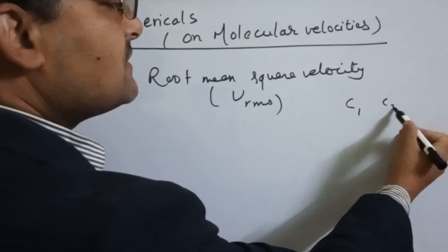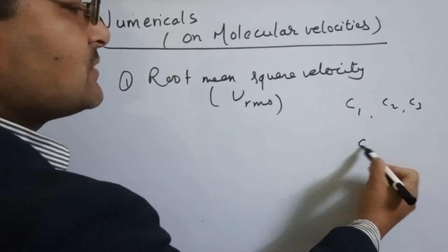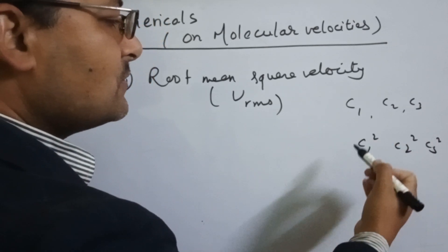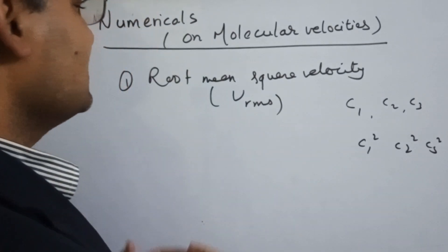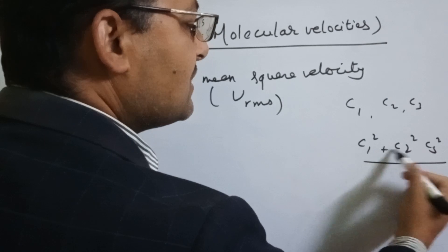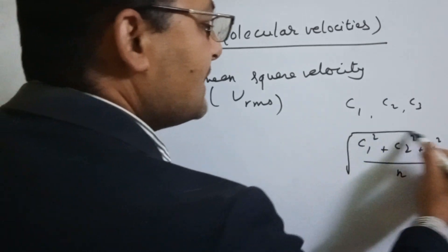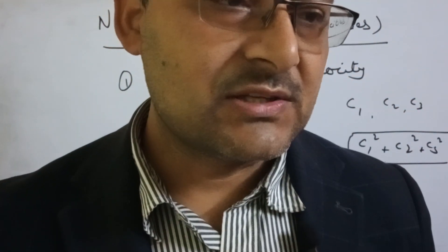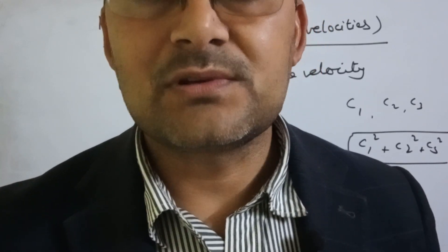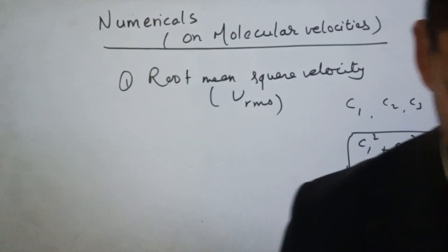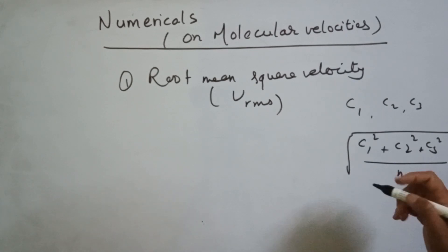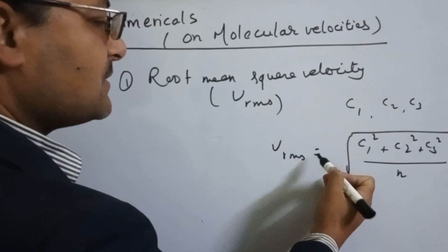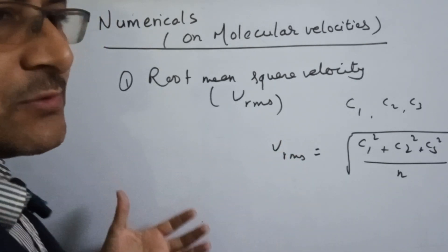We are going to use the velocities of individual molecules c1, c2, c3. This is the root mean square velocity of the gas molecule, called V-rms. This is one type of root mean square velocity.